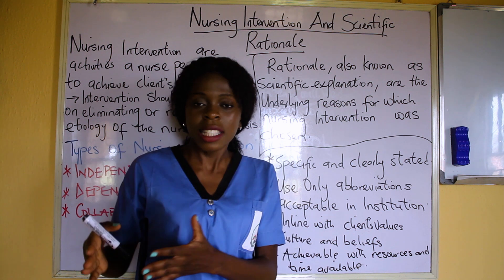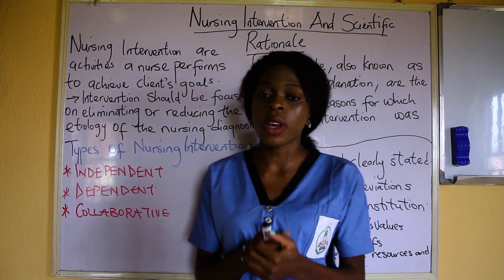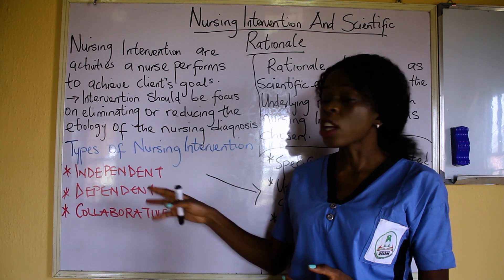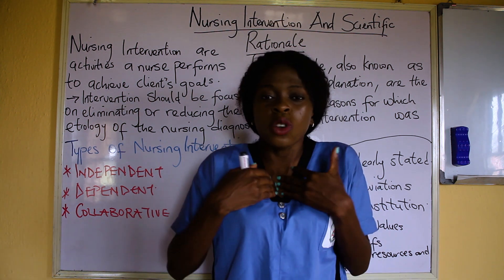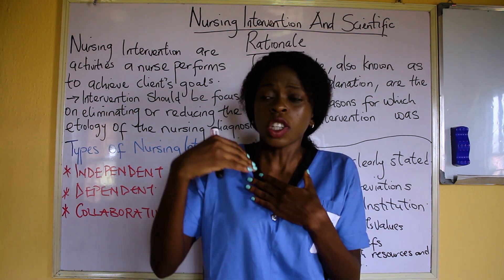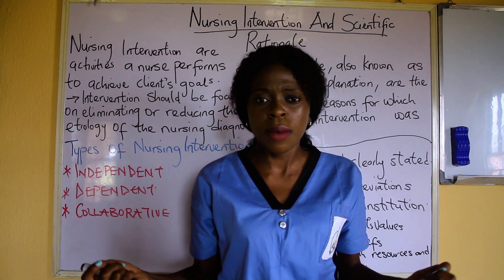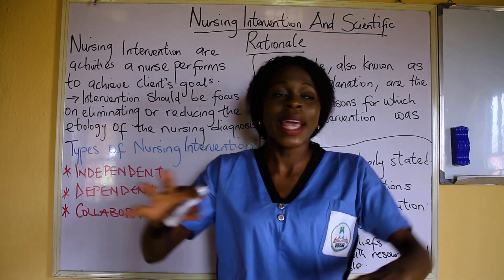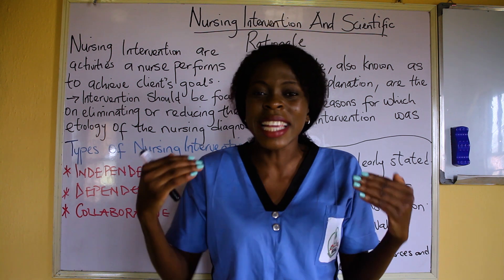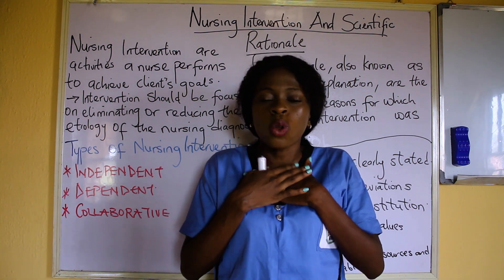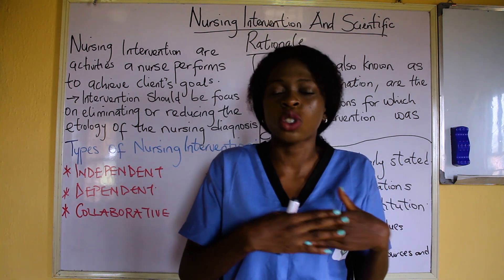We'll be giving examples of scientific rationale and also nursing intervention for some nursing diagnoses. The first type of nursing intervention is independent nursing intervention. When something is independent, you as a nurse are supposed to know this is what you are supposed to do — you don't need somebody out there to tell you. For example, if a patient is running a temperature, it is your duty as a nurse to tepid-sponge and expose nearby windows. That is an independent nursing intervention — an action a nurse performs using their own trained skills.